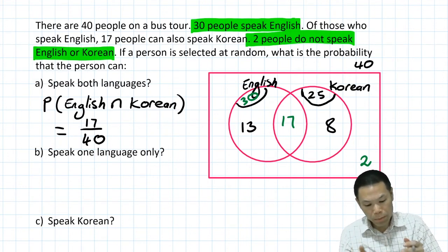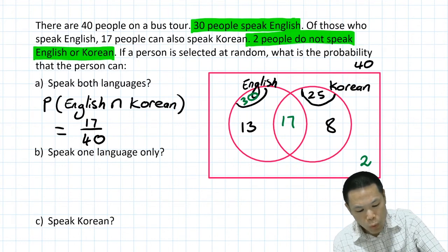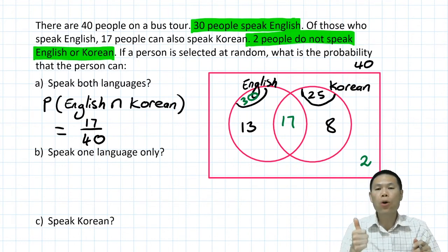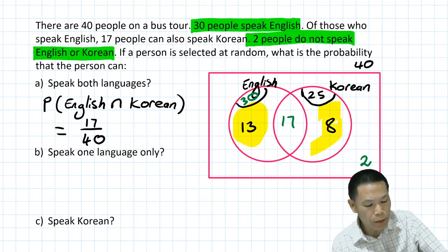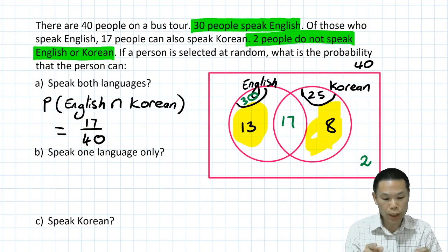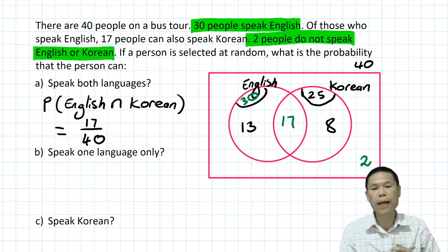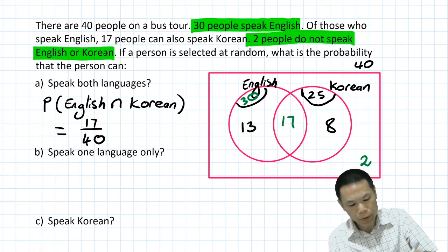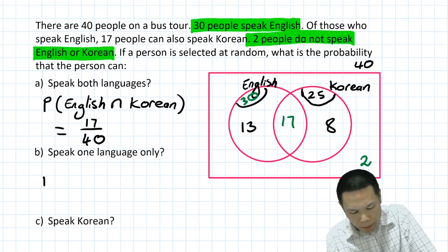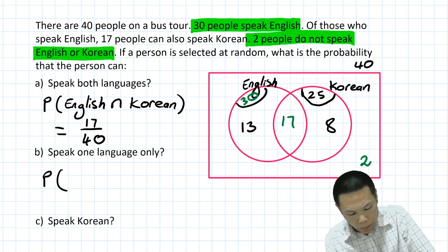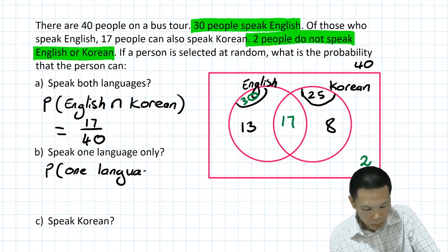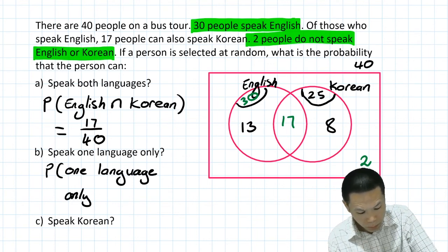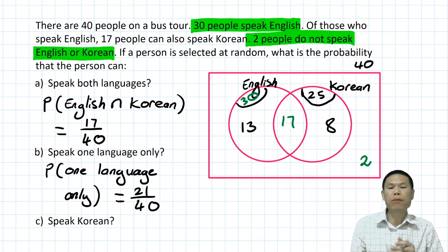Part B: what is the probability that the person can speak one language only — either English only or Korean only? That's 13 people who speak English only plus 8 people who speak Korean only. So 13 plus 8 equals 21. The probability of speaking one language only is 21 over 40, and I can't simplify so I leave it as it is.